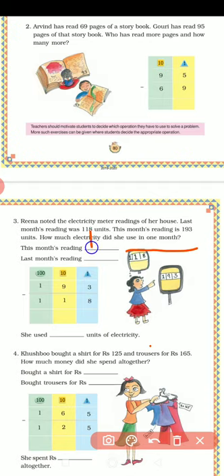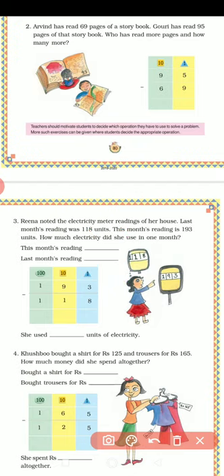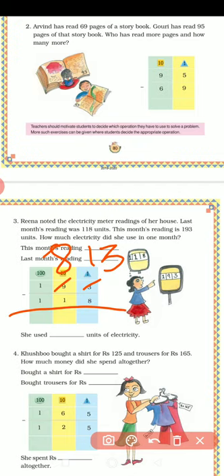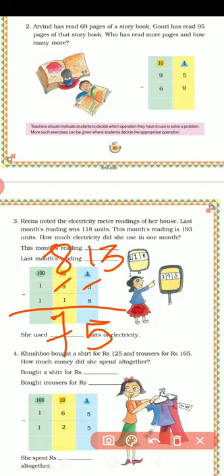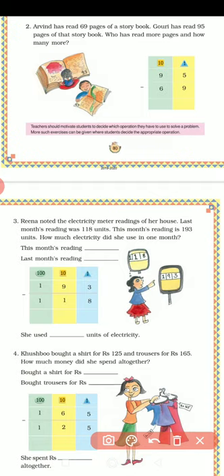So what will you write? This month's reading is 193, and last month's was 118. So 193 minus 118. We will subtract. Written here according to place value. So 3 will become 13 because 8 cannot be subtracted from 3, and 9 will become 8. 13 minus 8 is 5, and 8 minus 1 is 7, and 1 minus 1 is 0. So the answer is: she used 75 units of electricity.